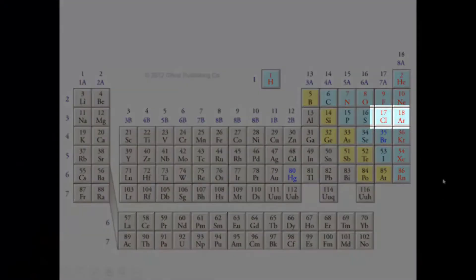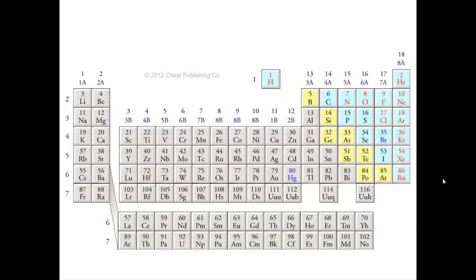Chlorine and argon, if you look on the periodic table, are on the same row. Argon is to the right of chlorine. As I told you in the past, as I go across a row from left to right, elements get smaller and smaller, and the reason is because they have more protons in their nuclei.